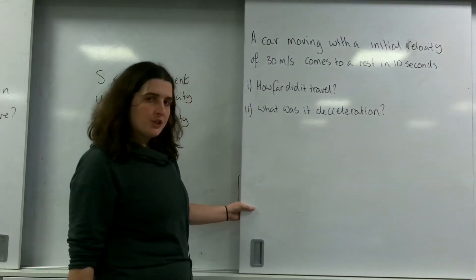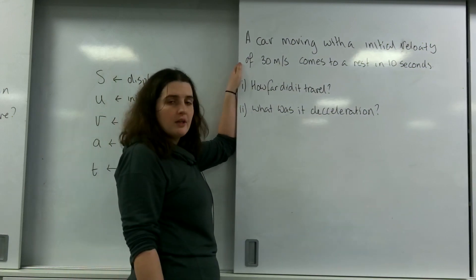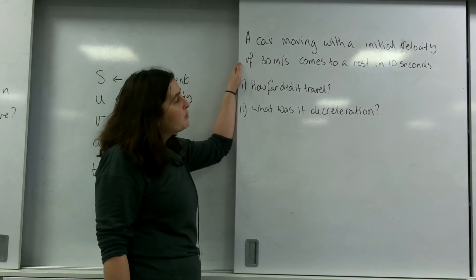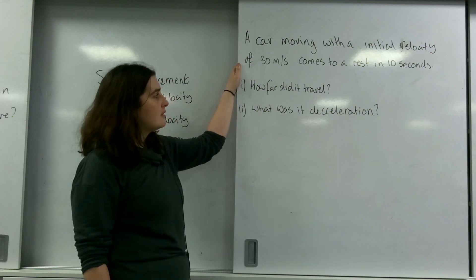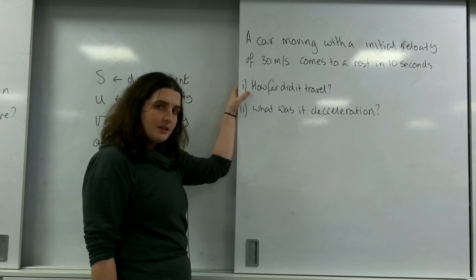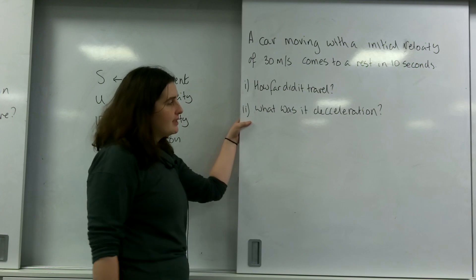So I have a question here where a car is moving with an initial velocity of 30 metres per second, comes to a rest in about 10 seconds. My question is, how far did it travel and what was its deceleration?